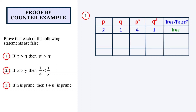Now let's try a fraction. Let's say p is a half and q is a third. So p squared is a quarter and q squared is a ninth. You can see that p is greater than q and p squared is greater than q squared, so this is also true.